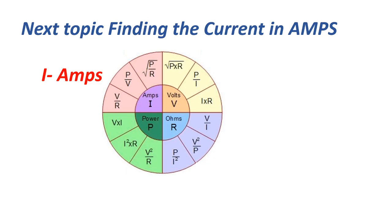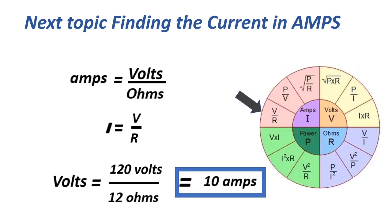The next topic is finding the formula for current in amps. Amps equals volts over ohms, or I equals V over R. Equals 120 volts over 12 ohms, equals 10 amps.